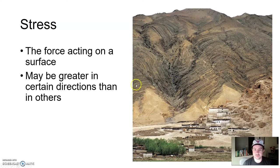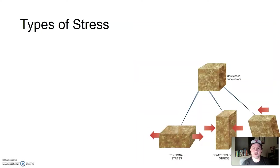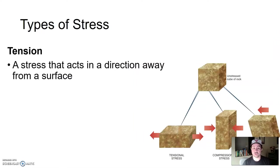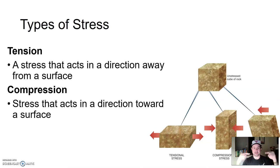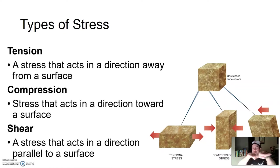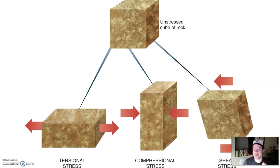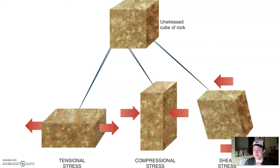If you look at these layers of rock just above this village, you can see how they're all kind of folded up. A stress has been applied to those. There are a few different types of stress: tensional stress, which acts in a direction away from each other — a pulling stress; compressional stress, which acts towards each other, compressing in; and then shear stress, which is side-by-side motion. Different types of stress create different types of faults, which we'll touch on again in a bit.